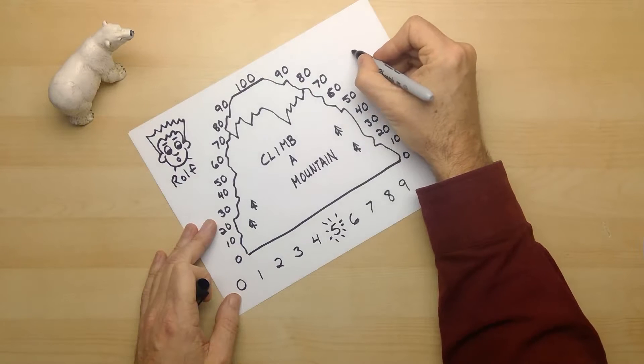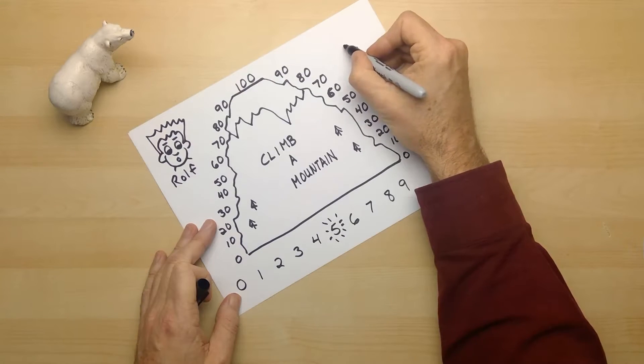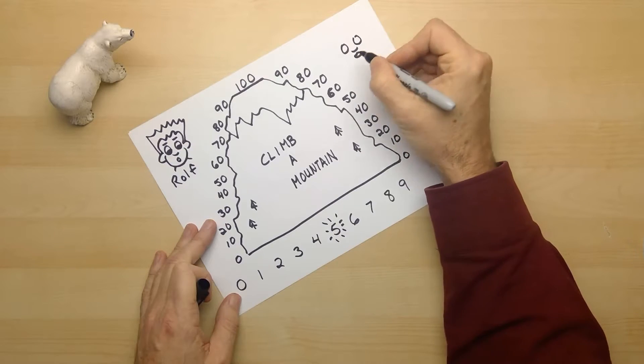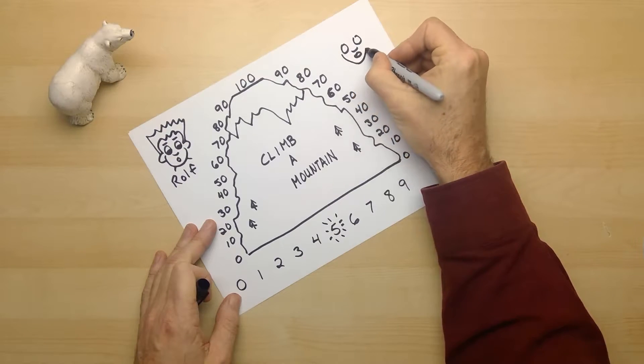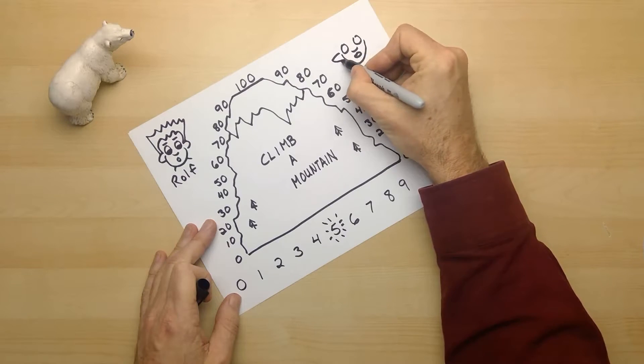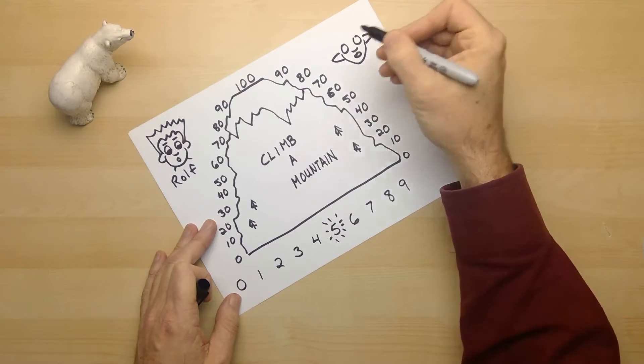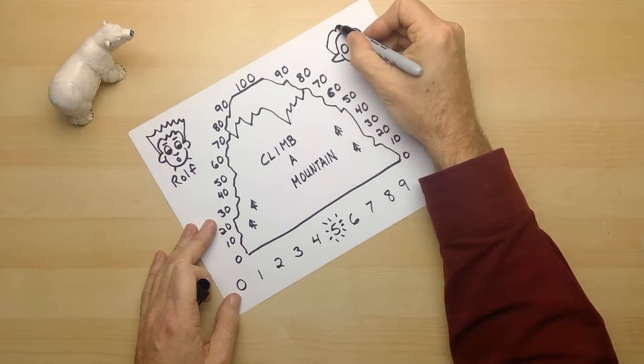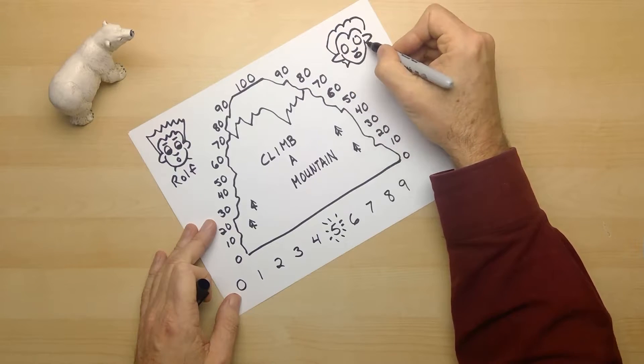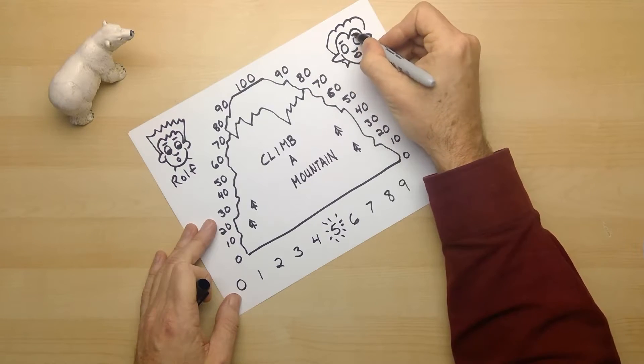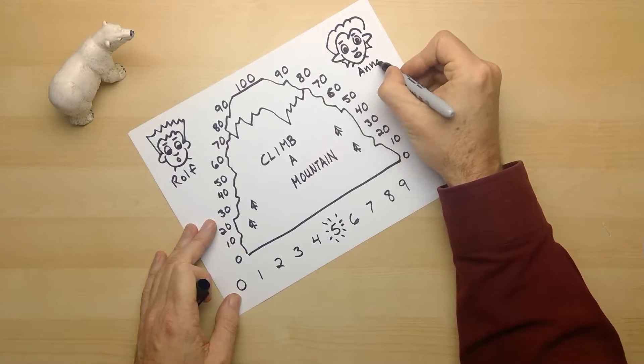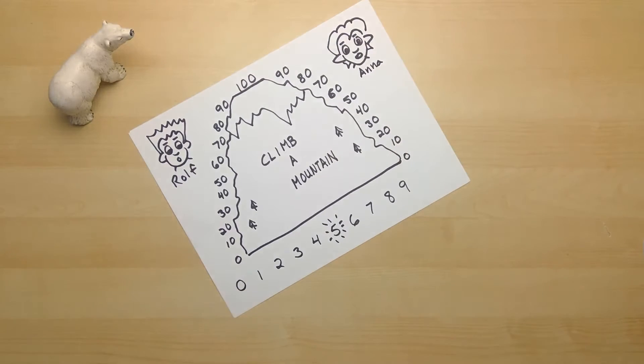And over here, a little curve, a couple circles, maybe a different shape circle there. And then an arc underneath, and maybe some ears. And let's see, some eyebrows, and eyes. And this person is Anna. So Rolf and Anna are going to be playing this game.